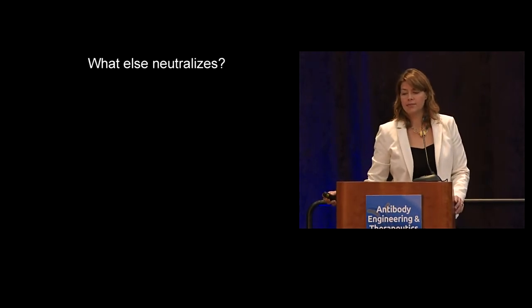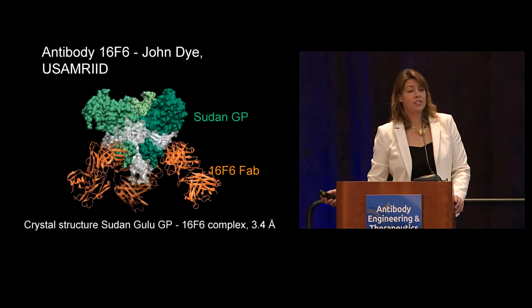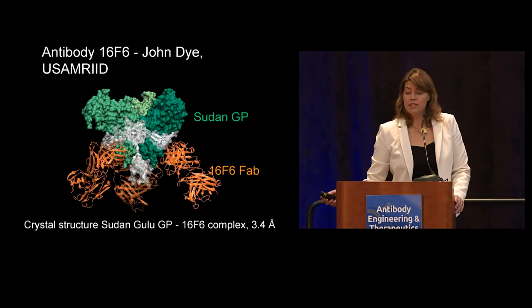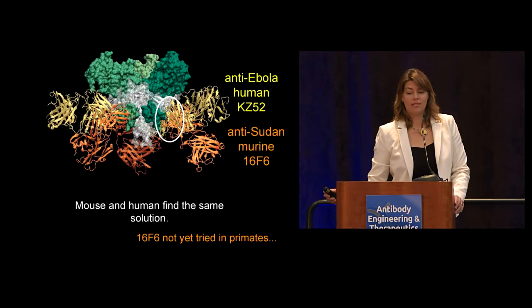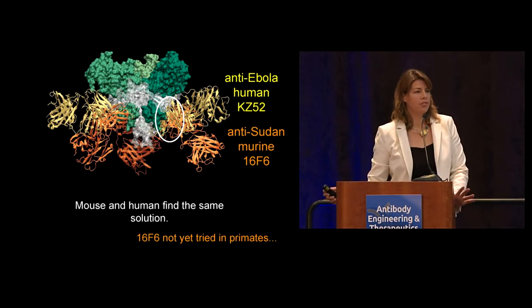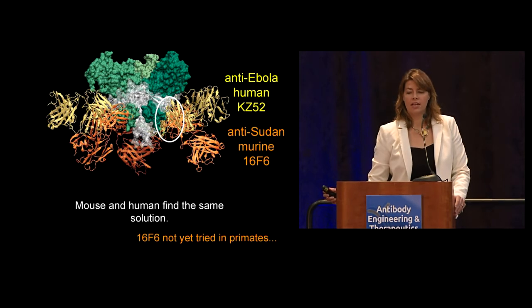Another neutralizing antibody is 16F6 — the crystal structure of the Sudan virus glycoprotein in complex with the only antibody known so far to neutralize Sudan, raised in a mouse by John Dye. Remarkably, 16F6 binds the same place as KZ52. Even though they're against different viral species that are about 50% different in glycoprotein sequence, and one is from an immunized mouse while the other is from a naturally infected human, they found the same spot. This represents a shared solution for neutralization of the Ebola virus genus — binding of the base.